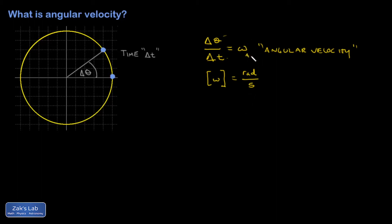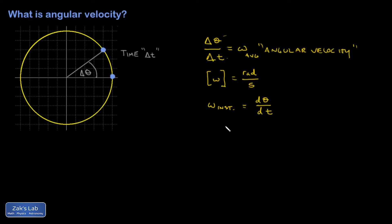I should be clear here that this is really an average angular velocity, because I have finite time intervals here. But of course I can take the small time limit and get the instantaneous angular velocity, and that's a time derivative of the angle. Note that if the angular velocity is constant, as it is in uniform circular motion, then the average is equal to the instantaneous.